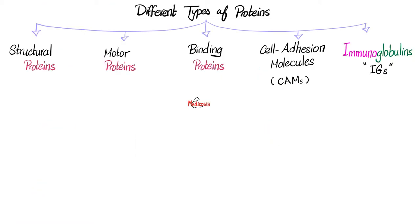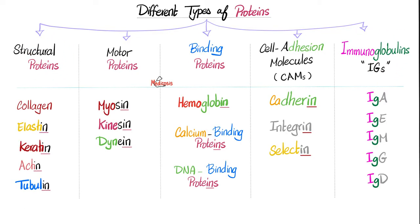So we have structural proteins, motor proteins, binding proteins, cell adhesion molecules, and immunoglobulins. The structural proteins are collagen, elastin, keratin, actin, and tubulin. Microfilaments, microtubules.